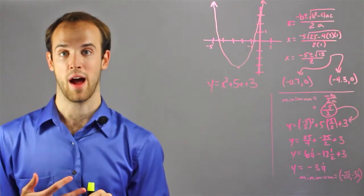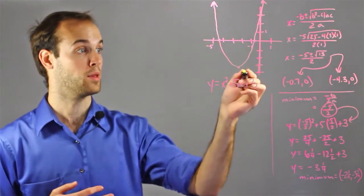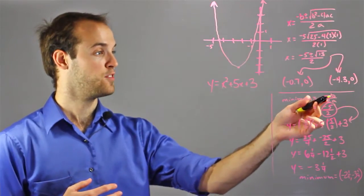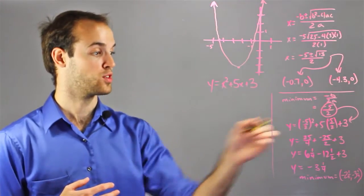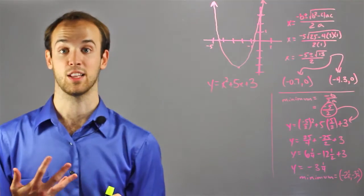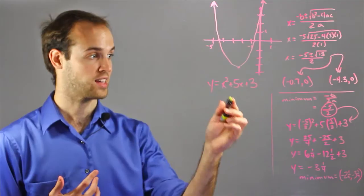The last point I'm going to need to graph this function is the minimum point or where the parabola bottoms out. And I find that just by doing negative b over 2a, which gets me negative 5 over 2. And I know that that is the x-coordinate of my minimum. And to get the y-coordinate, all I'm going to have to do is plug that back into the original function for x.